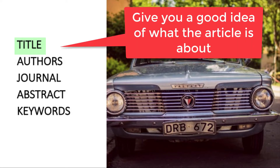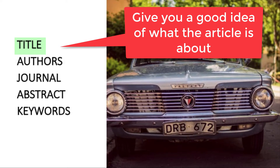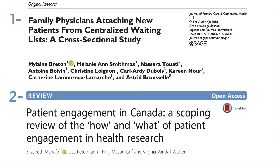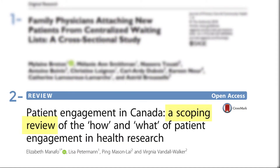The title should give you a good idea of what the article is about. It may include the word 'research' or a specific study design to help you identify if the article is reporting empirical research. For example, some titles will right away tell you that this is a systematic review or a case study. You can get a lot of information from a title and can quickly decide between the 'maybe' articles and the 'definitely not relevant.' As you see in these examples, we see this is a cross-sectional study, and this one is a scoping review.